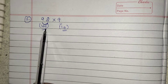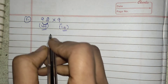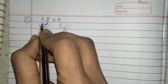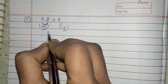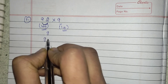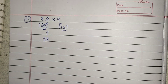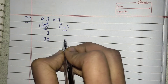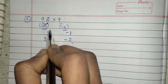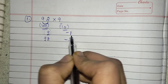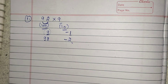So how do we solve such questions? 98 is how much lesser than 100? It is lesser than 100 by 2. And 9 is how much lesser than 10? It is lesser than 10 by 1.